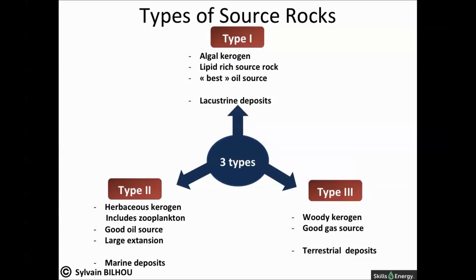Type 3 source rocks — the organic matter comes from vegetal debris, which means they are of terrestrial origin. They are deposited in deltaic environments and tend to generate mainly gas with associated light oil when thermally cracked during deep burial.